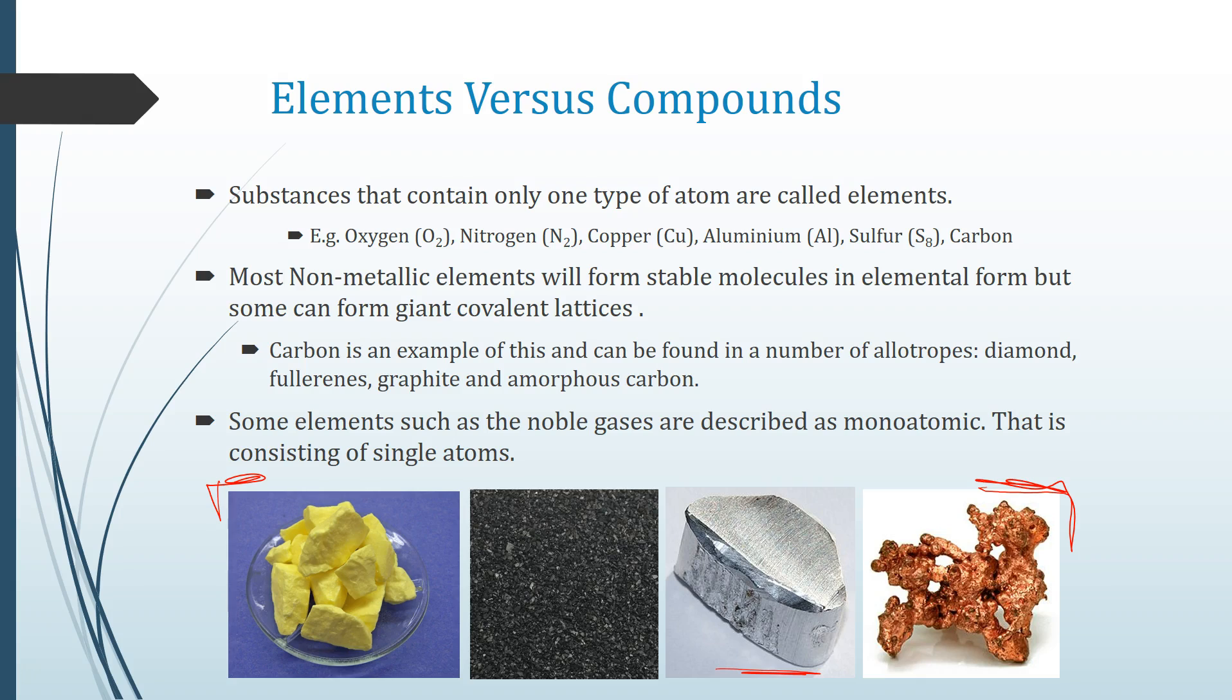We also have some aluminium here, which doesn't tend to be found in pure elemental form in the earth's crust; it's a bit too reactive, so we tend to find it as an ore and then process it to get pure aluminium. Carbon and this yellow one here is sulfur. Sulfur actually comes as an S8 molecule in elemental form, so it's all sulfur atoms but how they're bonded can be a little bit different. Generally, non-metallic elements form stable molecules, but they can form giant covalent lattices as well.